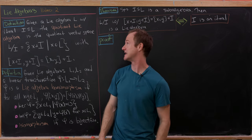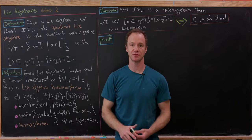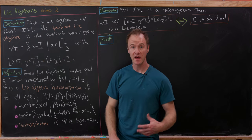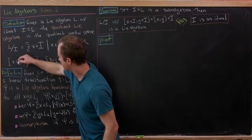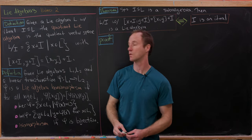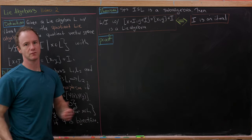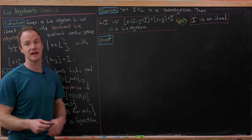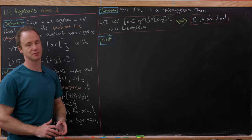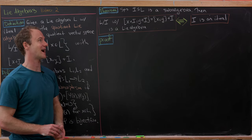Now let's look at the notion of a quotient Lie algebra. Given a Lie algebra L with an ideal I, the quotient Lie algebra is the quotient vector space L mod I — the set of all cosets of I — with bracket defined by: the bracket of coset (x+I) with coset (y+I) equals the coset [x,y]+I. We'll now prove that L/I with this bracket is a Lie algebra if and only if I is an ideal.